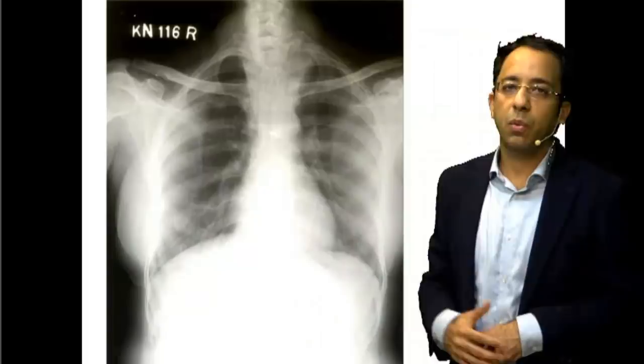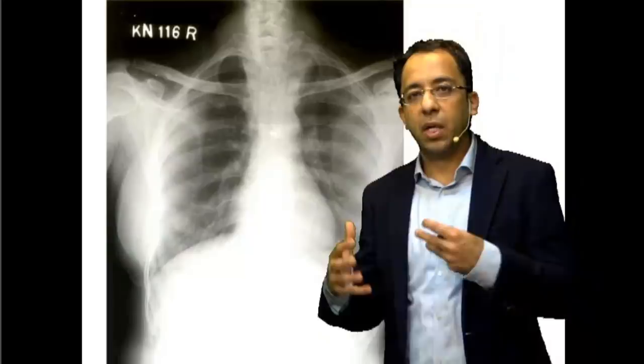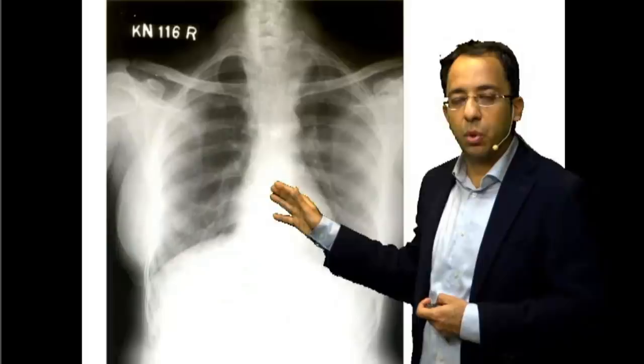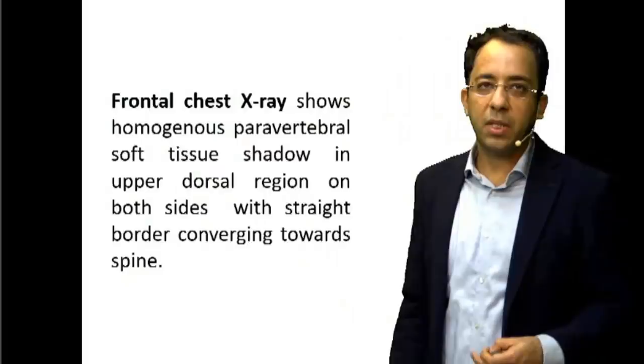When we look at posterior mediastinal lesions, we think of neurogenic tumors, spine lesions, paravertebral abscess, or a duplication cyst. This is a paravertebral lesion converging onto the spine, showing the cervical thoracic sign. A CT scan of this patient was advised.